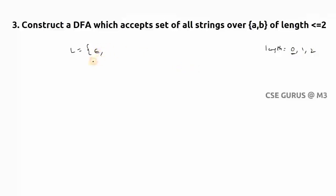Now length equals one means it has to accept either a or b. Length equals two means aa, ab, ba, and bb. So your DFA has to accept only these strings.